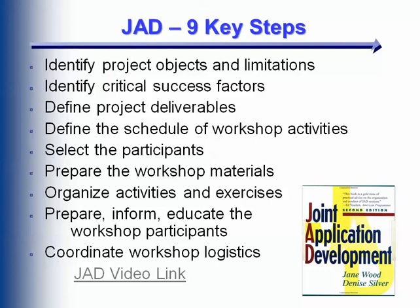Joint application development gets a whole bunch of people together at once — in a manufacturing company that might include people from the sales side, shipping, and other departments, all with different concerns. They do a lot of learning as they get together in one room and talk about how their data needs and processes affect one another. They may have never really talked to one another about how their jobs overlap, so you get everybody together and go through a structured process of identifying and putting together a system that meets everybody's needs, quickly cycling through gathering information and getting feedback.